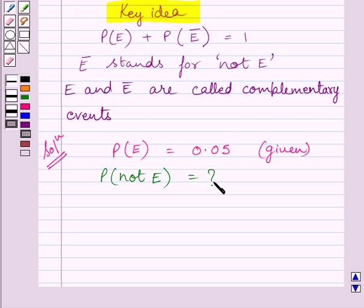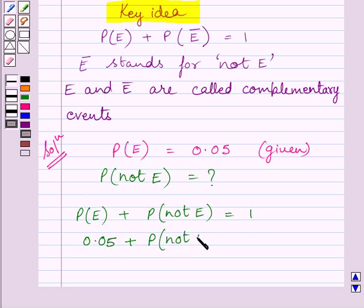Now from key idea, we know probability of E plus probability of not E is equal to 1. Now substituting corresponding value of probability of E in this expression, we get 0.05 plus probability of not E is equal to 1.